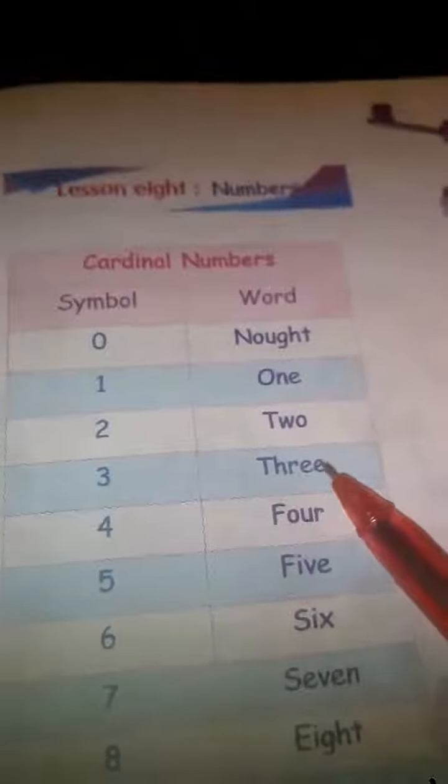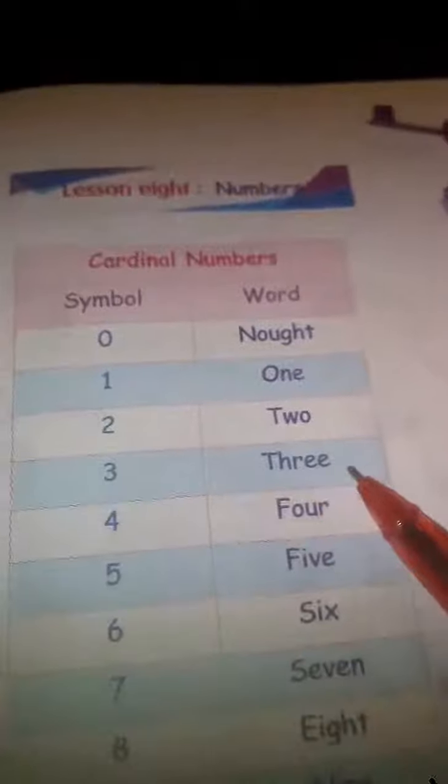In English, when we have two vowels together it is long. We say three, not three. Three, because we have two vowels together. It is long vowel. Naught, one, two, three, four, five, six, seven.